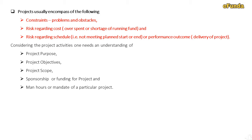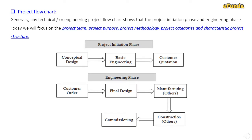We will see further details of all these project-related activities. Project flowchart: generally, any technical or engineering project flowchart shows the project initiation phase and engineering phase. Today we will focus on project team, project purpose, project methodology, project categories and characteristics. The project initiation phase includes conceptual design, basic engineering, and engineering phase, followed by customer order, final design, manufacturing by vendors, construction by the construction contractor, and finally commissioning.